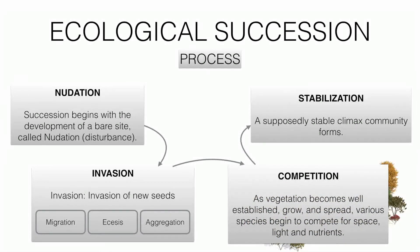The stages of ecological succession begin with nudation — the development of a bare site or availability of clean land where nothing exists. After nudation, there is invasion of new seeds, which is divided into three parts: migration, where new seeds migrate to the bare land; ecesis, where they establish themselves; and aggregation, where more and more seeds accumulate.